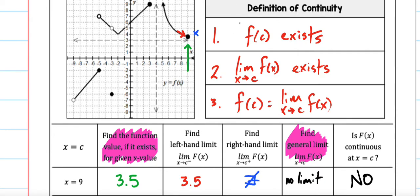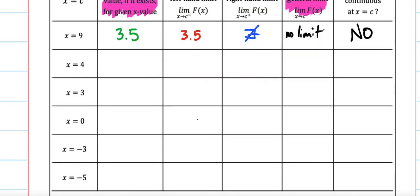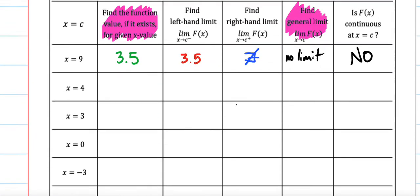That's basically the definition up here. Number one, F of C exists. Well, that's the first pink highlighted one. Number two, the limit exists. Well, that's the second pink one. And in this case, it didn't. So, automatically no. But either way, they have to be the same answer. If I remember correctly, only one of these is a yes for continuity.